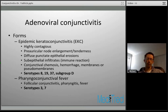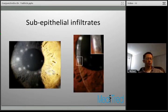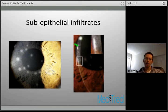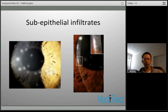This picture shows the subepithelial infiltrates typical of EKC — numerous round white lesions scattered diffusely throughout the cornea. On slit lamp you can see their subepithelial location, as collections of white cells just under the epithelium.